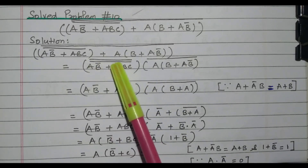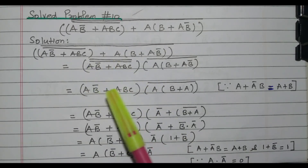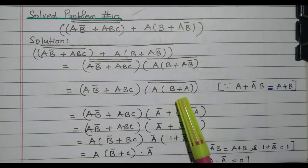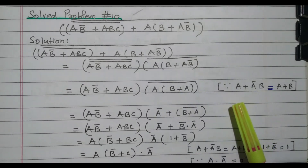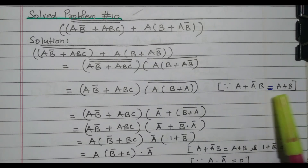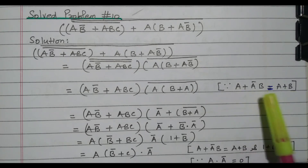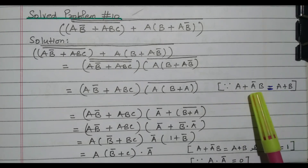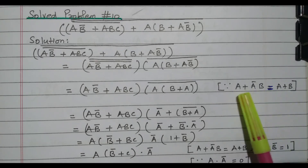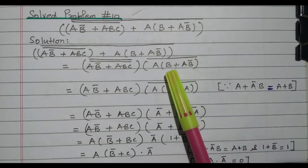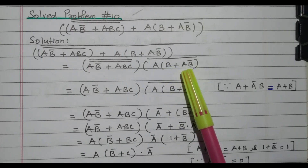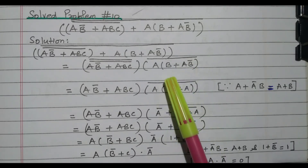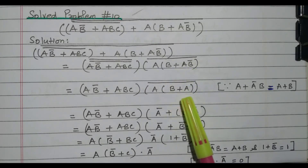The double bar available here is removed by double complement cancellation. Now we simplify A into B plus AB-bar. The term B plus AB-bar can be written as B plus A, based on the theorem A plus A-bar B equals A plus B. The single term is written as it is; in the double term the complement is removed and the remaining variable is kept. So B plus AB-bar equals B plus A.